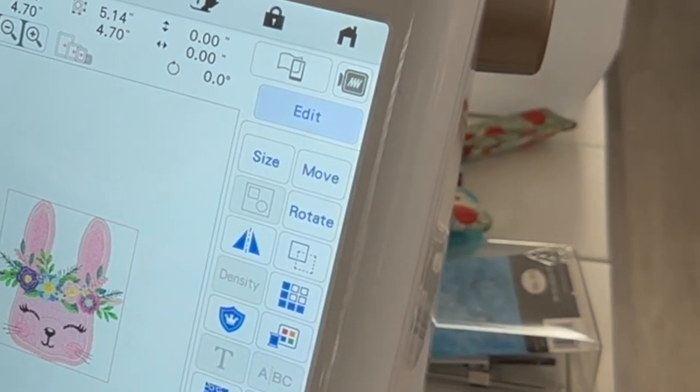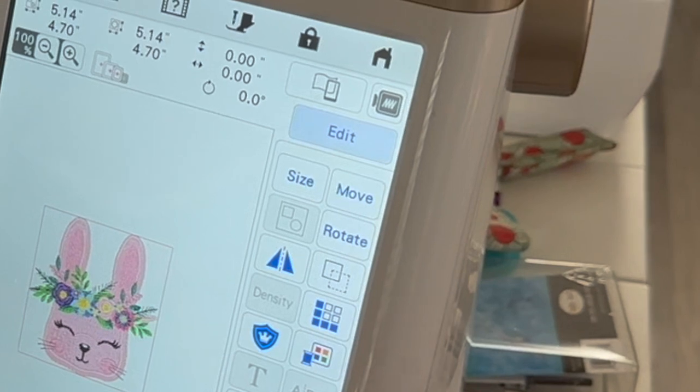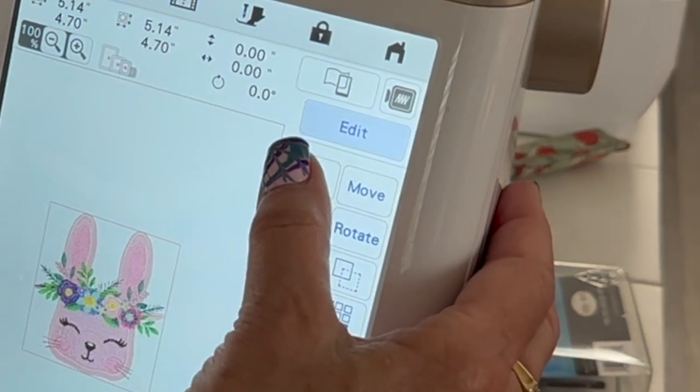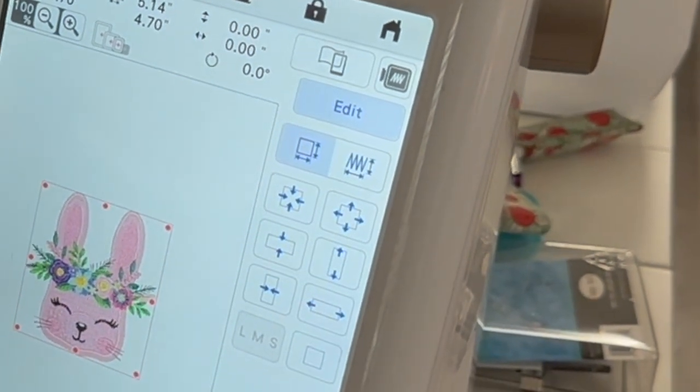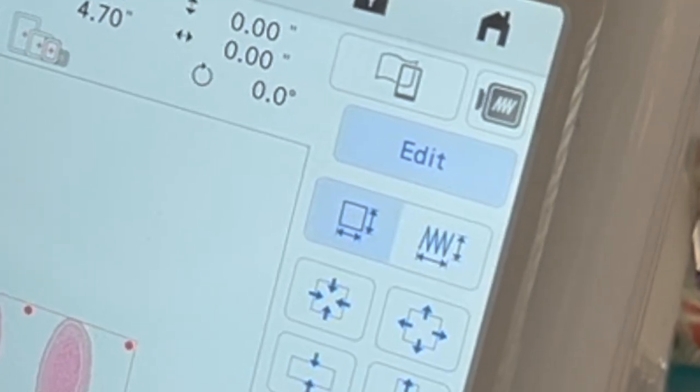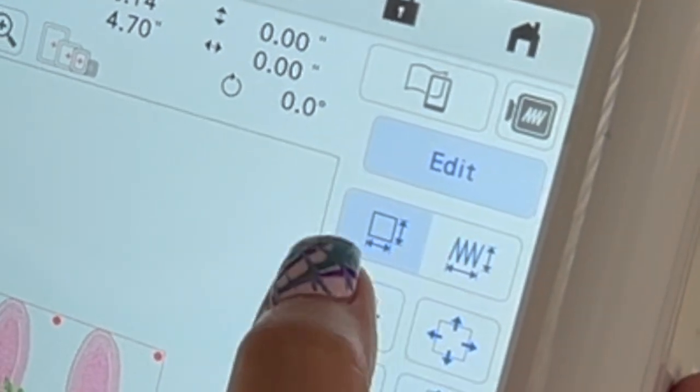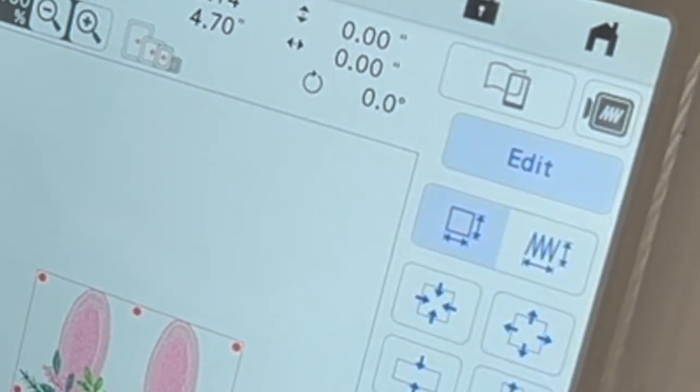I'm going to go into my edit icon here and then I'm going to go over to size and at this point it brings up two different icons. The first one is just a little square and that's going to change my size.